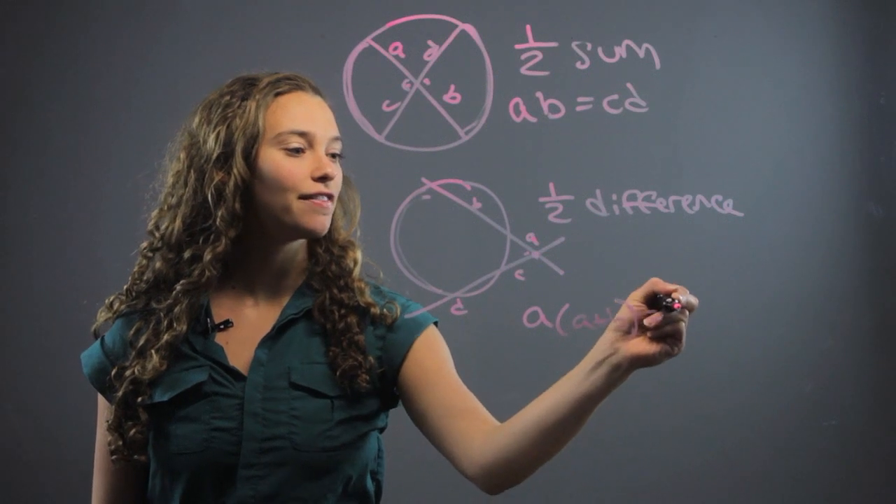When the two segments intersect outside the circle, if this is A, this is B, this is C, and this is D, A times A plus B is equal to the product of C times C plus D. And that's how you can find the segment lengths when the segments intersect outside the circle.